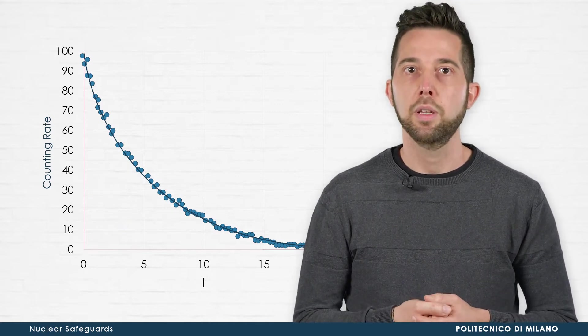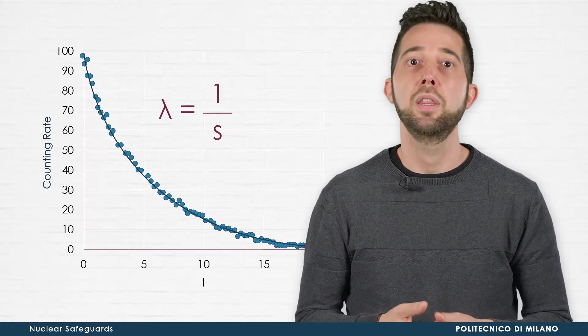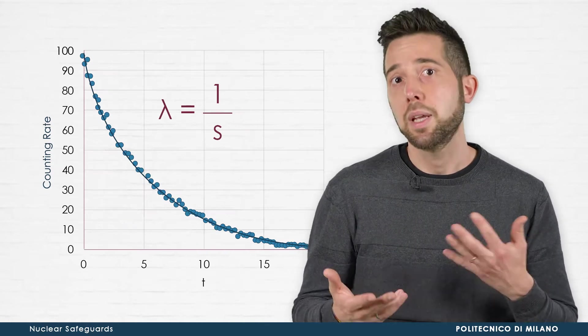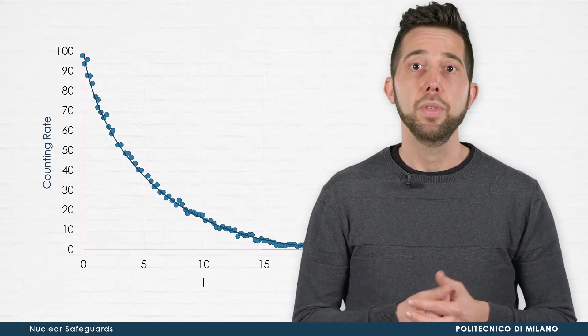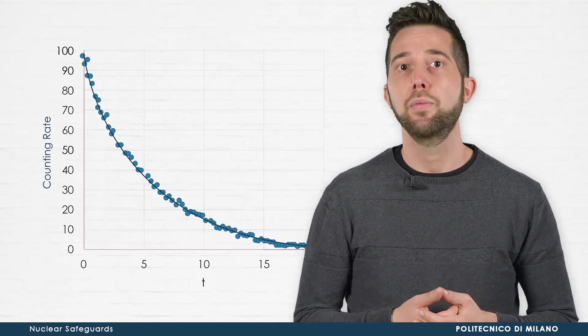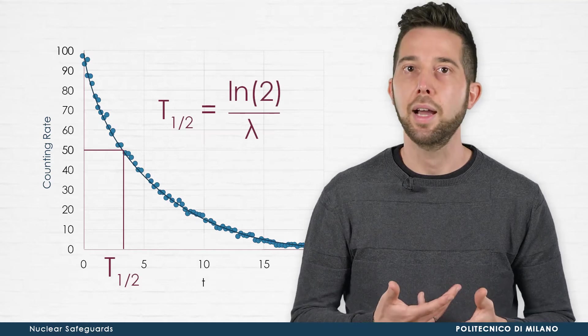The unit of measurement of the decay constant is the inverse of a time, typically 1 over second. Instead of lambda, it is often convenient to define, from an operational point of view,